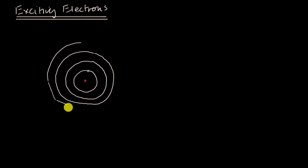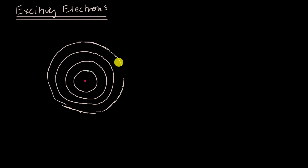This is obviously hand-drawn, and just for visualization purposes. We know that electrons don't orbit nuclei the way planets orbit stars. They have both particle and wave-like properties, and they're more of a probability density function of where you might find them. These energy levels are associated with different probability densities of various energies. This is what a neutral hydrogen atom typically looks like with the electron in its ground state.